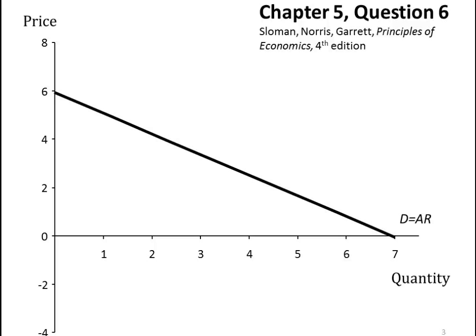Let's start with a downward sloping demand curve or average revenue curve for our firm. We know that the marginal revenue curve will have double the slope of the average revenue curve. At around three and a half units of quantity, marginal revenue falls to zero. Thereafter, marginal revenue would be negative — meaning you would be taking away from total revenue by producing at those levels.